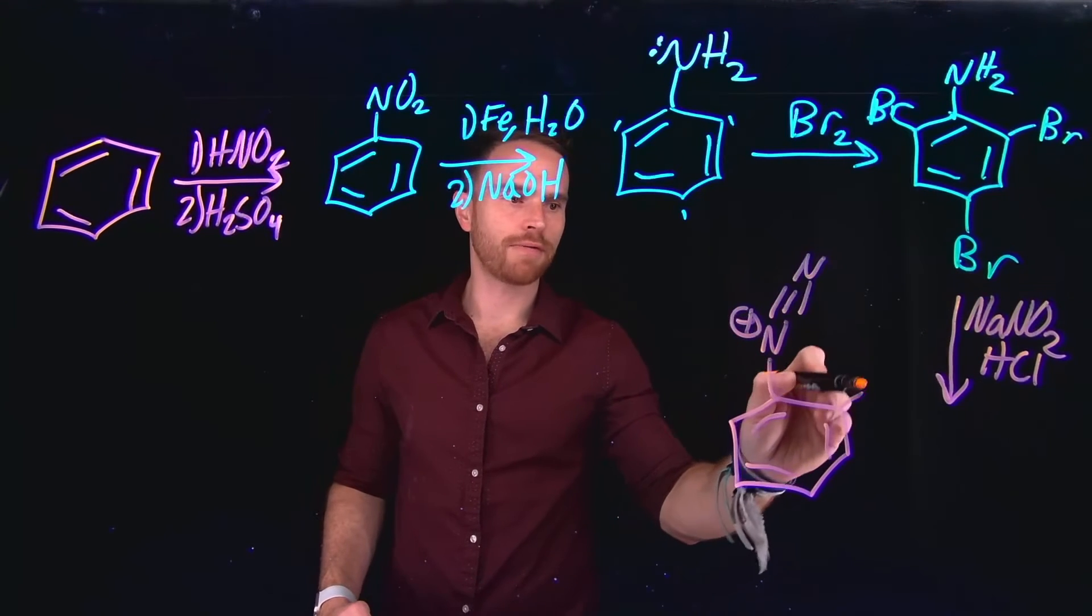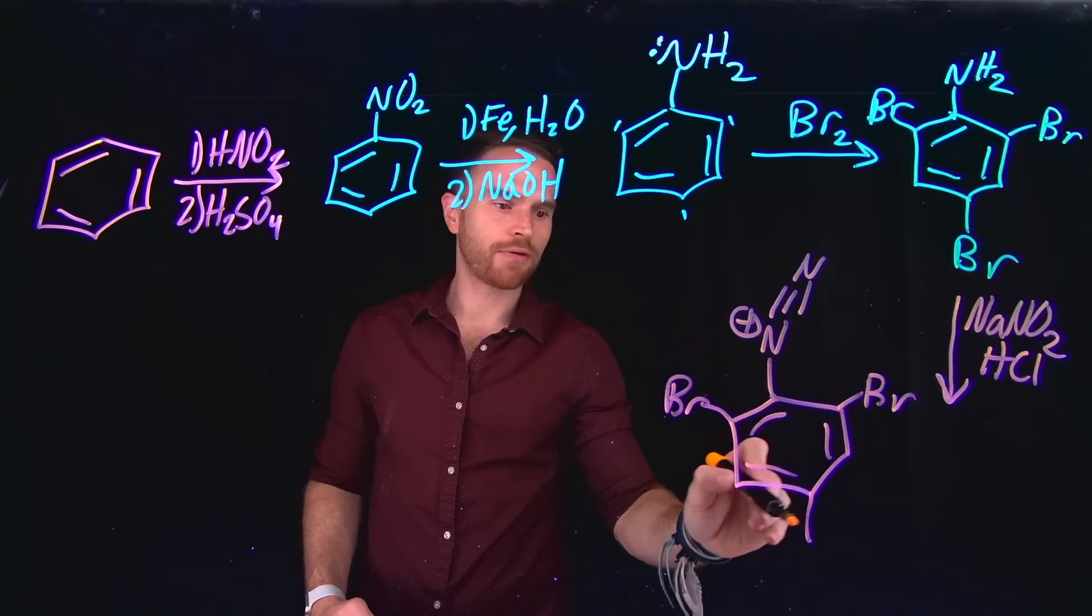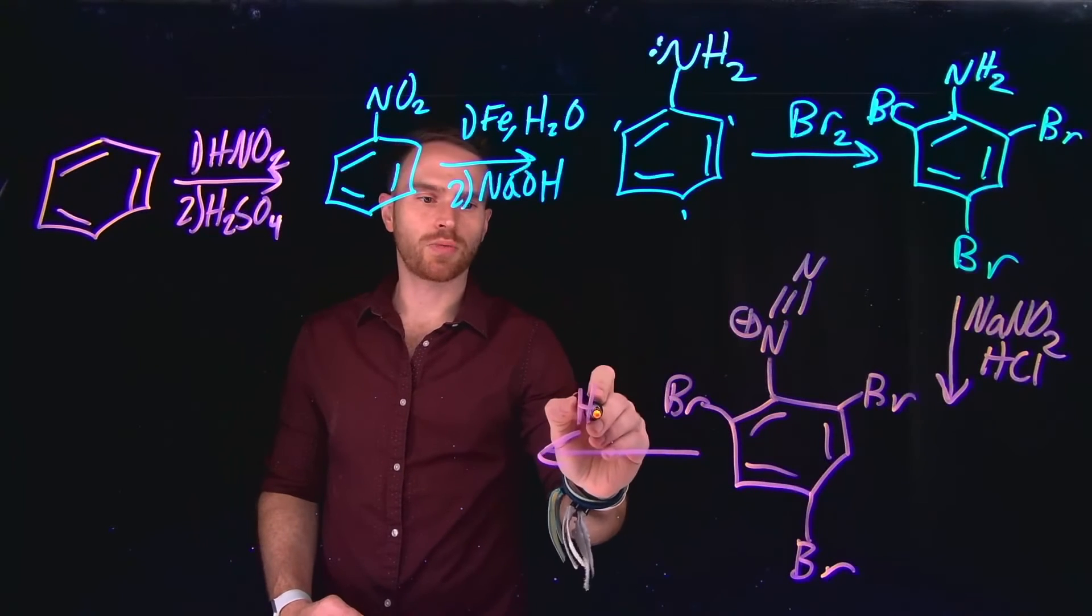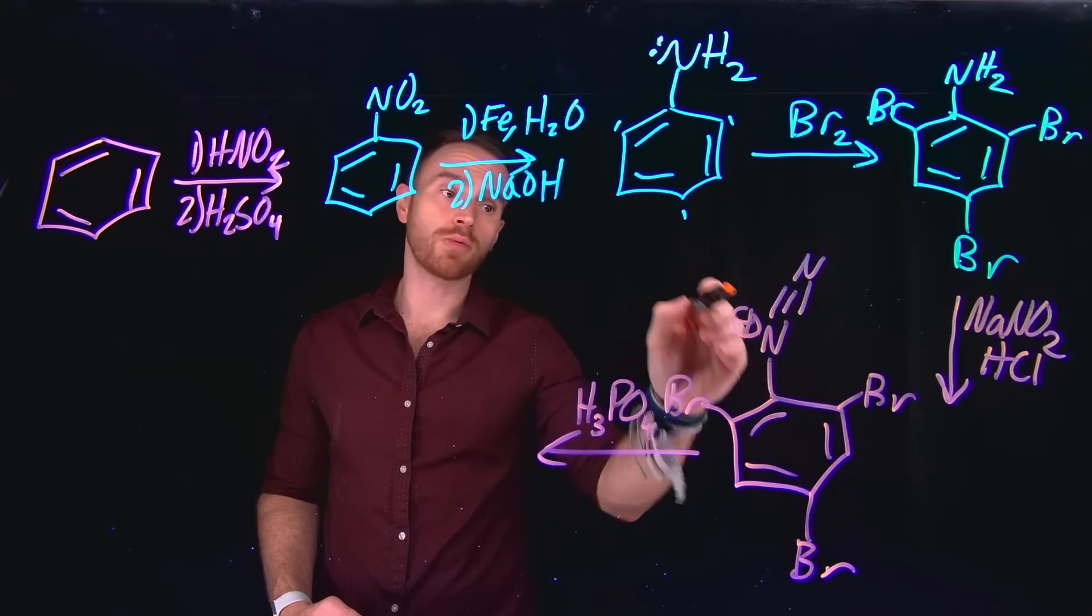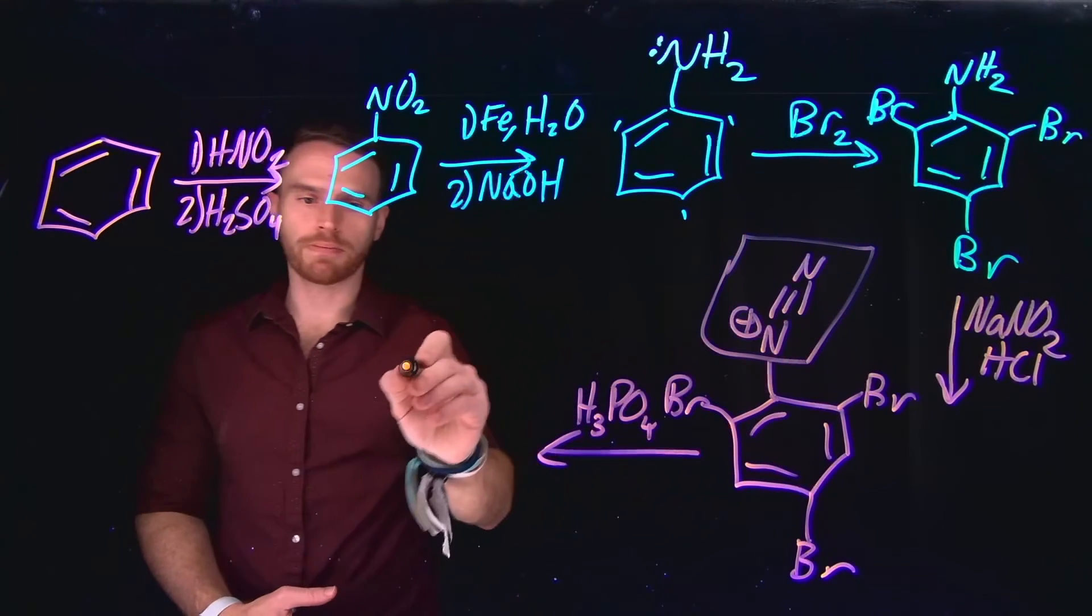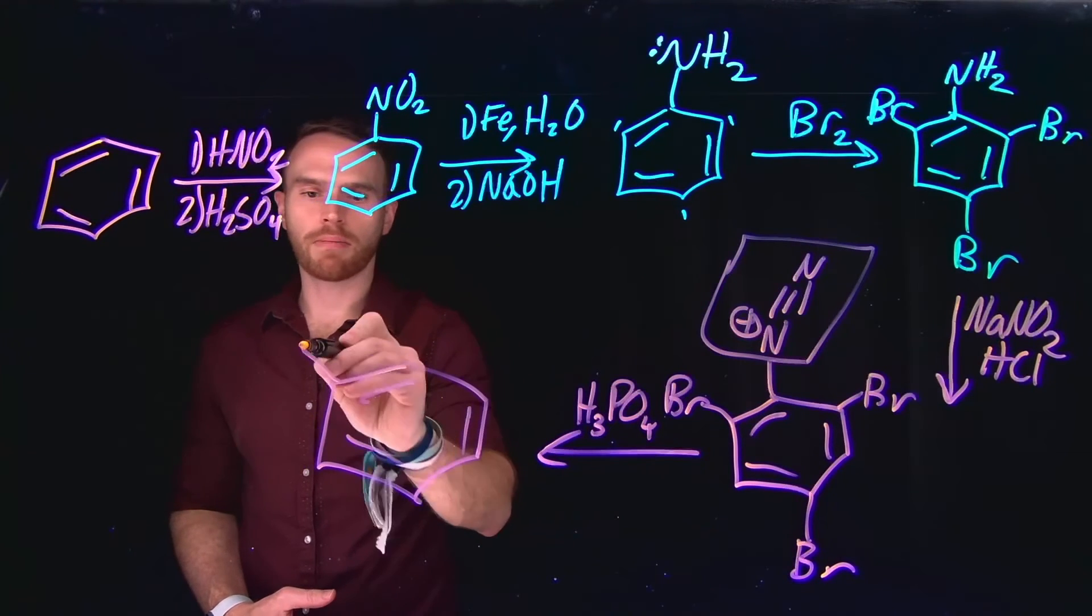And now from here, one of the reactions that I learned about is actually reduction. So in the presence of phosphoric acid, I will reduce this diazonium salt to just a carbon-hydrogen bond, which means that now I have generated a molecule